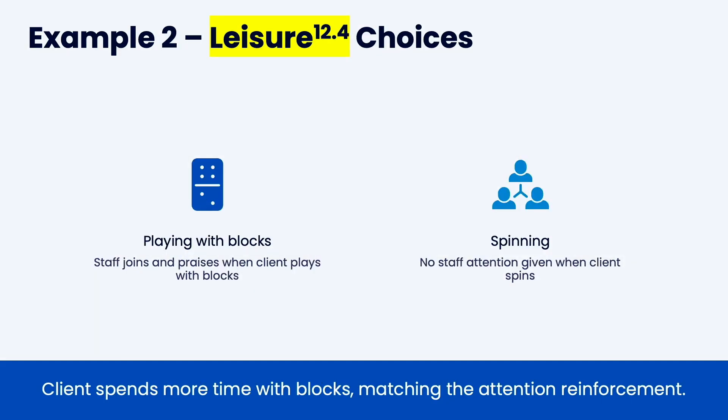For leisure choices: when a client goes to blocks and starts playing, staff joins and praises them every time. But if there's no staff attention when the client spins, yet someone always says 'don't do that' when they spin — that's attention. When they quietly go to the play area and play with blocks and no one joins them, you're going to see more spinning. Reverse that and you see more block play. Most of the time, bad behaviors get more attention than good behaviors, especially in school settings.